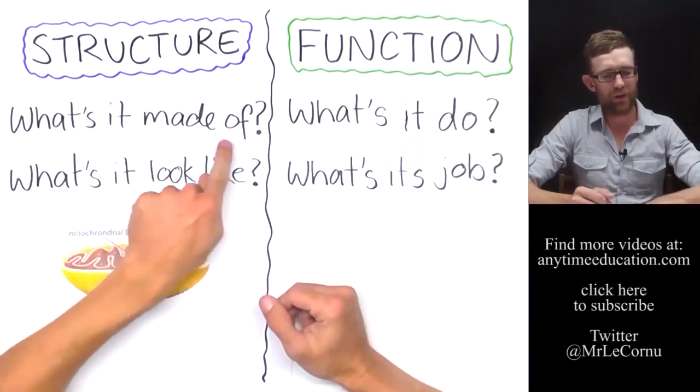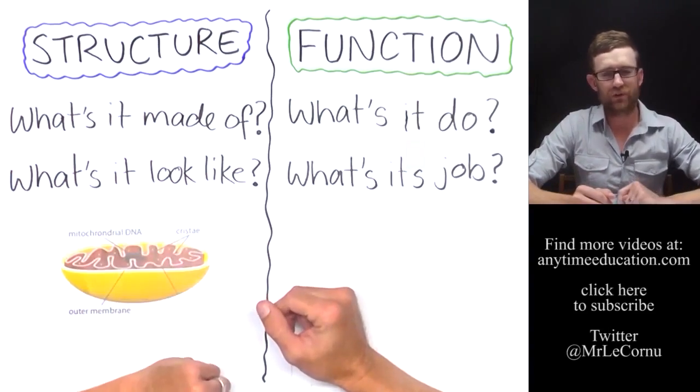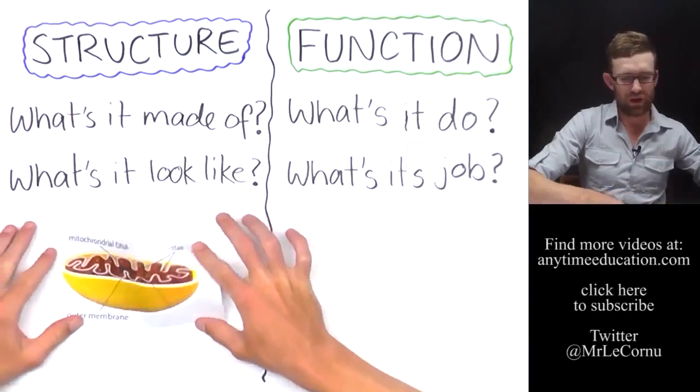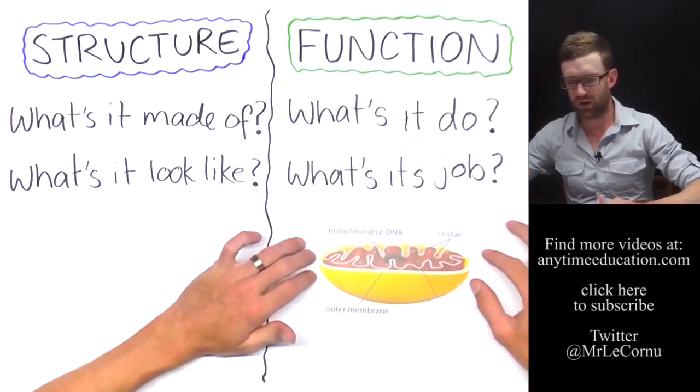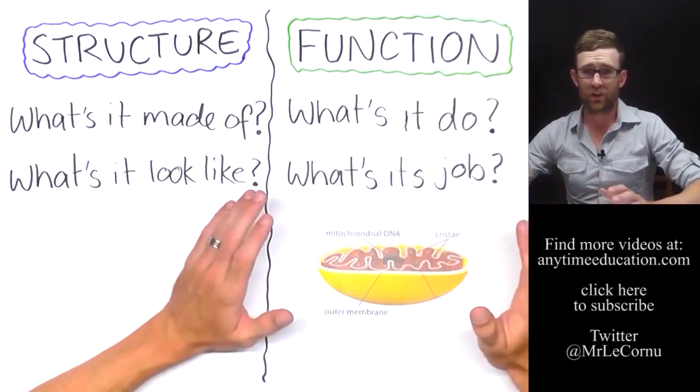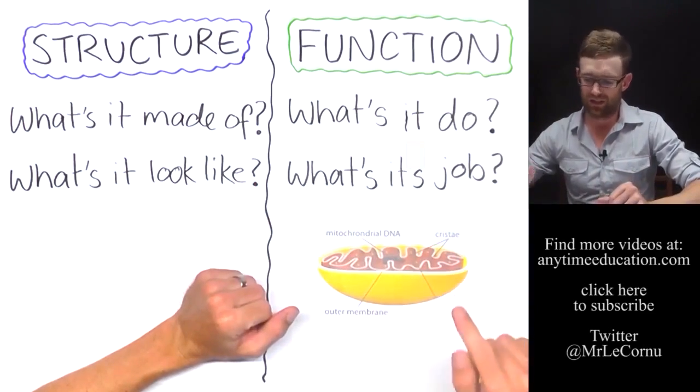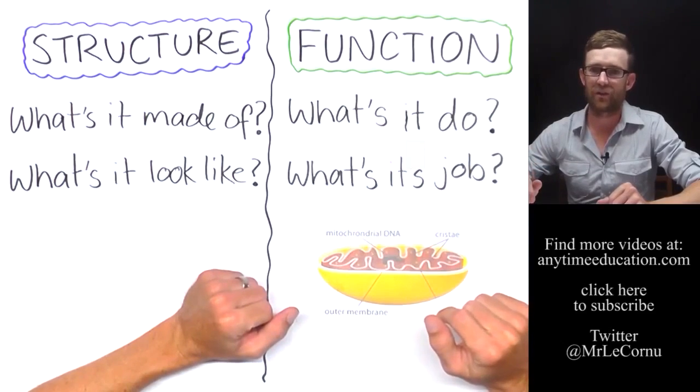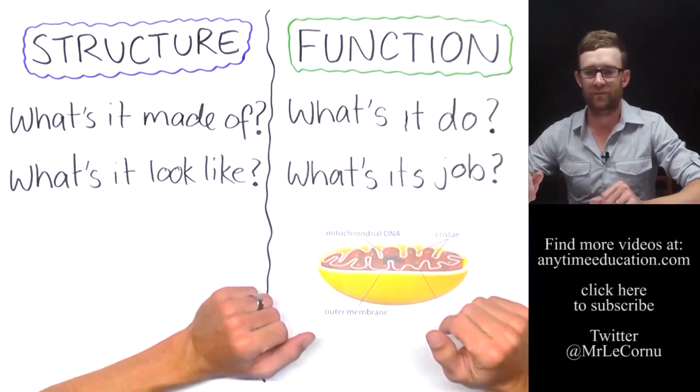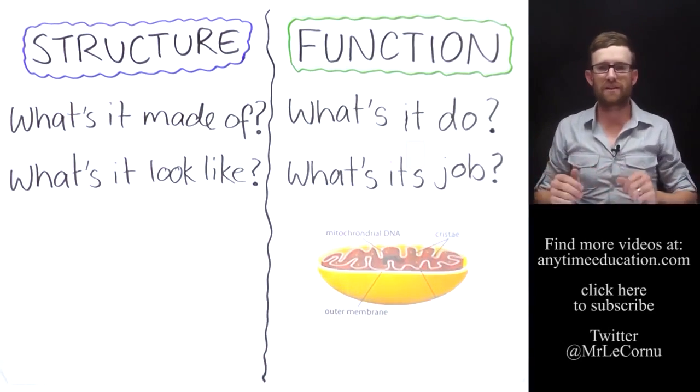If you ask me about the function of the mitochondrion, I'm going to give you a totally different answer. I'm going to say right, the function of the mitochondrion, it's the site of the latter stages of aerobic respiration where energy is produced. Notice that those two answers are totally different. That's because structure and function are totally different.